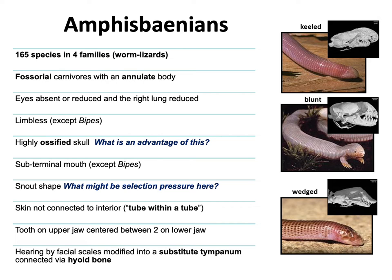They're all carnivorous, like most reptiles. Living underground means they don't need their eyes, so eyes are reduced or completely absent. They've undergone other modifications: their right lung is reduced to a small bag, the left lung being the larger. They have varying degrees of limb presence, but for the most part no visible limbs — they might have the skeleton but not visible ones.